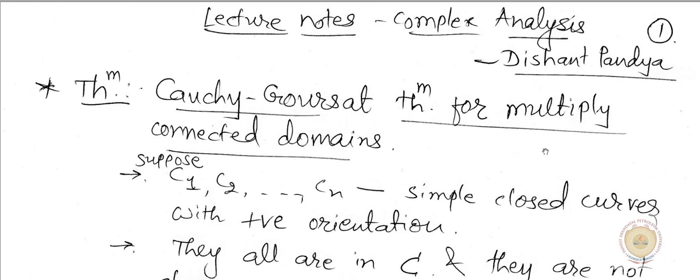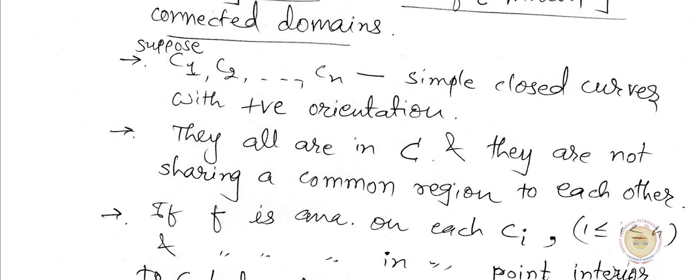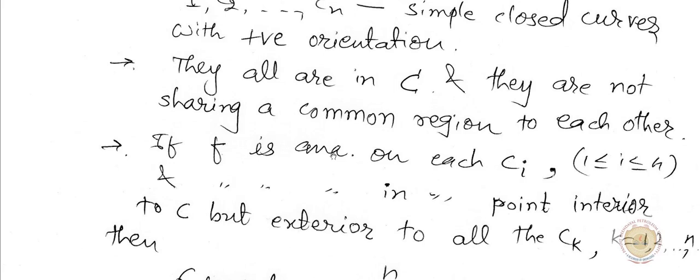If you consider one multiply connected domain, it consists of a few parts. In the statement, suppose we consider C1, C2, up to Cn — all simple closed curves with positive orientation. The second requirement is they must lie in the original contour C, and they are not sharing a common region with each other. That means, for any two contours, their intersection must be an empty set.